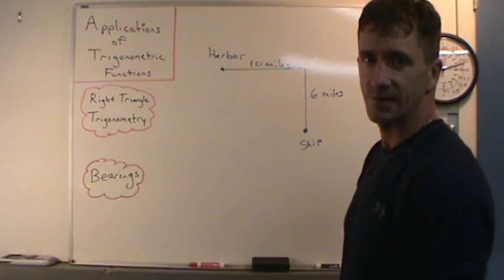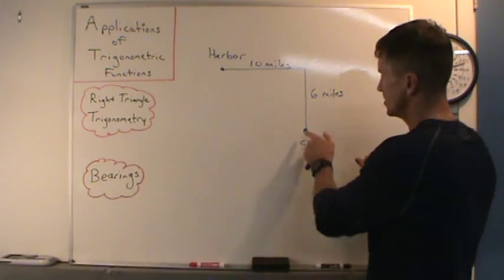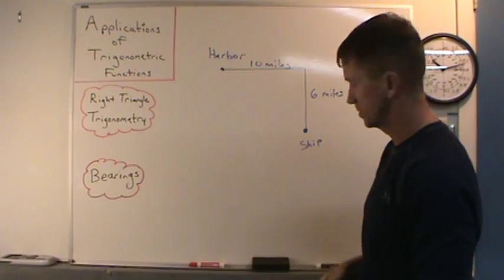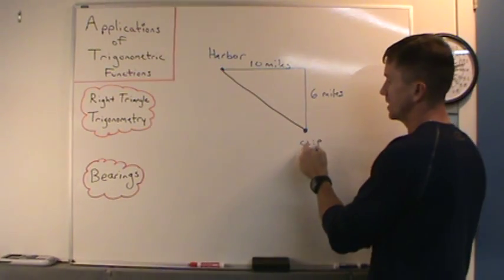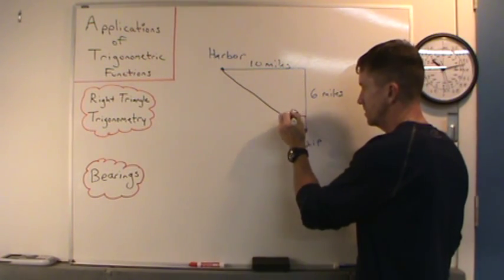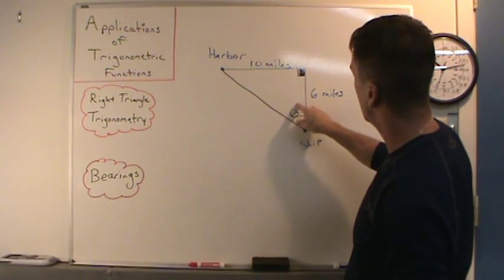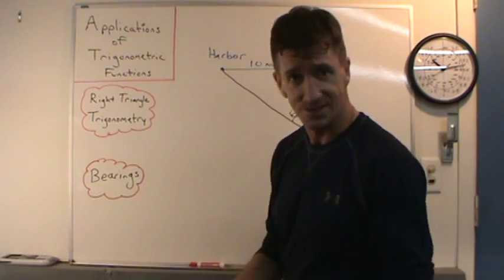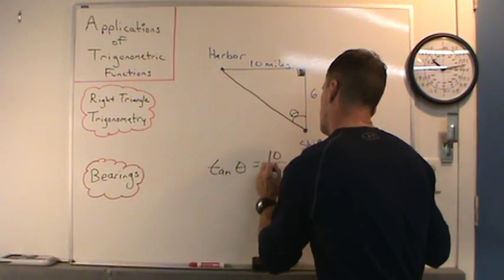The question: find the bearing from the ship to the harbor if you sail directly to the harbor. So I'll just connect these. We need the bearing from this ship to that harbor — we need an angle, and I'll call that theta. Here's our 90 degrees and our right triangle. With this angle theta, we've got 10 opposite and 6 adjacent. Opposite and adjacent — tangent. Tangent of theta equals opposite over adjacent.